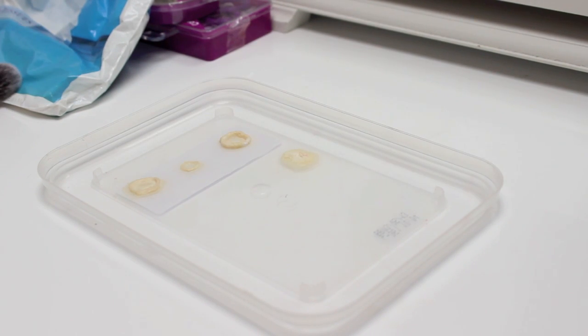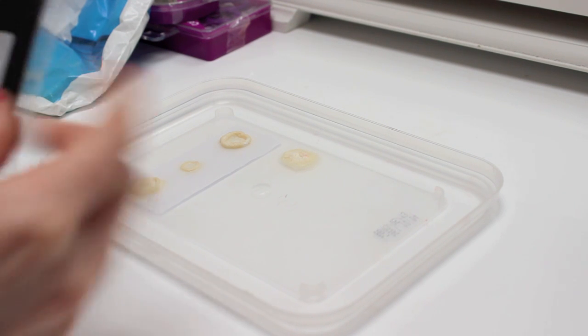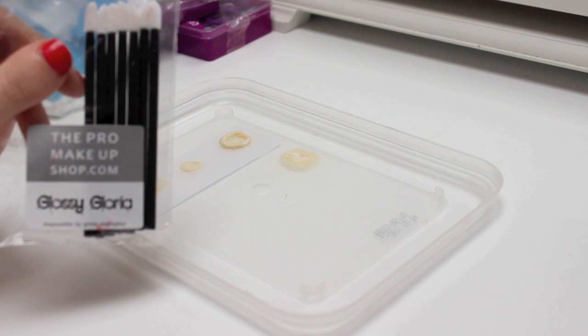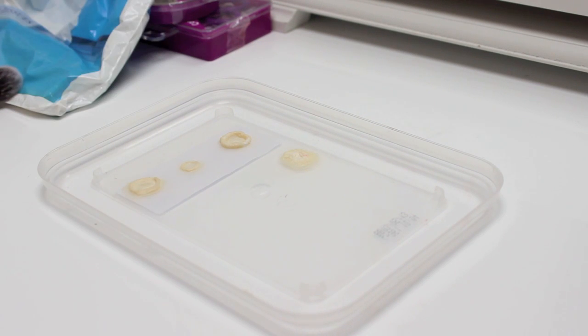The last thing we need is something to apply the liquid latex to the lid. Now I am using the disposables and these are the lip gloss ones. We are not going to use makeup brushes because liquid latex will kill makeup brushes. Once liquid latex gets on a makeup brush, you cannot use it again for applying nice normal makeup. Because the liquid latex sticks to the bristles and it doesn't come off. So you really, really do not want to be using your nice makeup brushes for doing this.